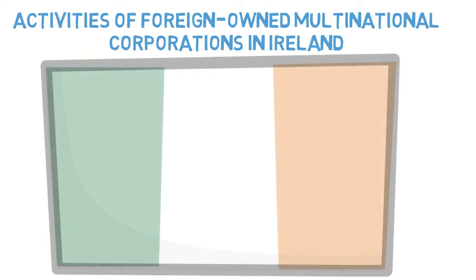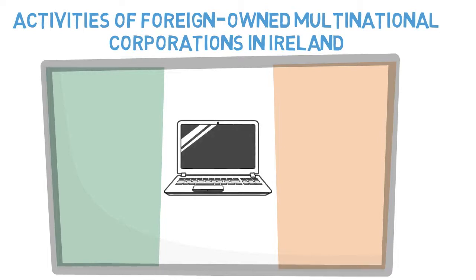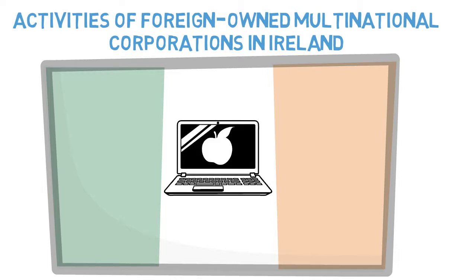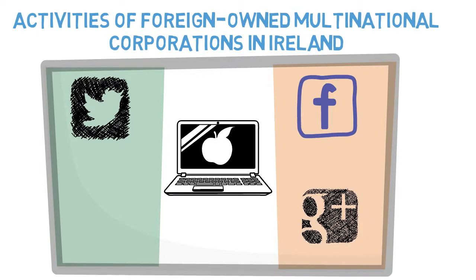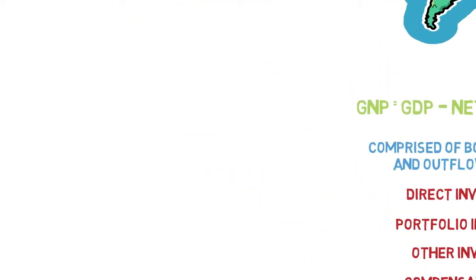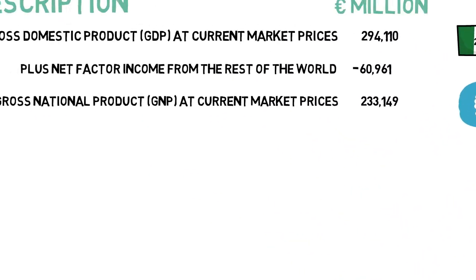The overriding factor for Ireland is foreign-owned multinational corporations and the repatriation of profits. Ireland has quite a lot of FDI — foreign direct investment — with companies that have headquarters here, or companies that have inverted to set up their headquarters here, and therefore pay the majority of their taxes in Ireland at a low corporation tax rate. Because of this, when they send profits back home, we have a large negative net factor income figure.